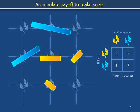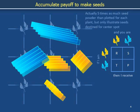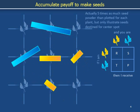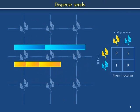Seeds will be dispersed from a plant into the five sites comprising the site of origin and its nearest neighbors. For clarity, only the portion of the seeds that will be blown into the center site is illustrated, meaning that each plant actually makes five times as many seeds as illustrated. In this case, there are more blue seeds than yellow seeds collected at the center site, which determines the type of plant that will occupy that site in the next generation.